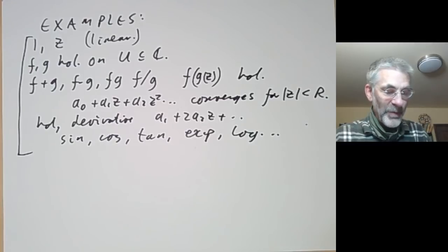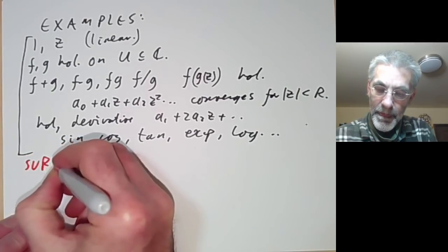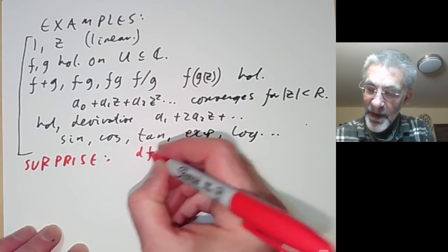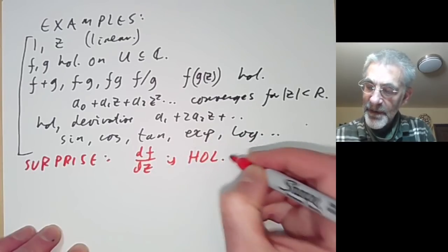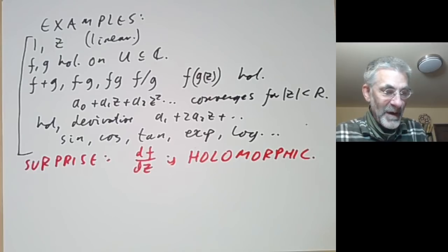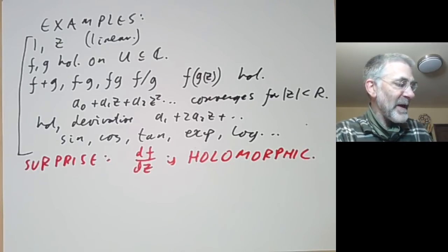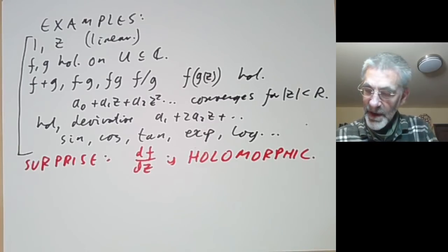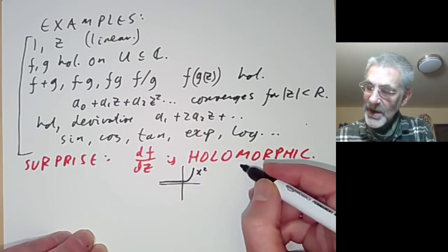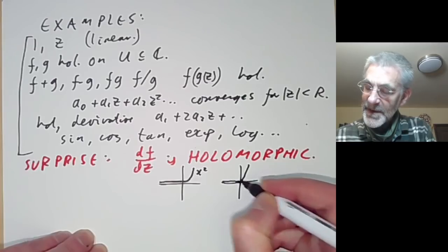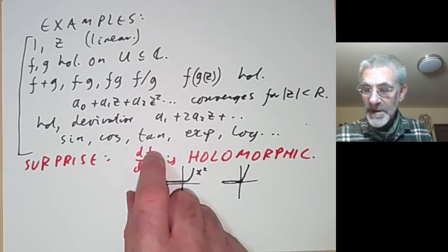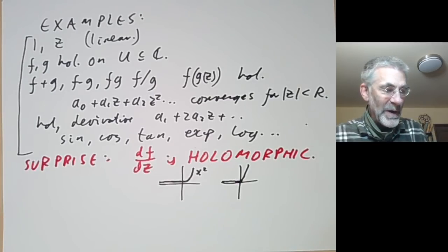There's a non-obvious example: df/dz is holomorphic if f is. The reason this is a surprise is it's totally false for real variables. You can have a function of a real variable that's differentiable everywhere — for example, zero for x less than zero and x squared for x greater than zero — and its derivative is certainly not differentiable at zero. We're not going to prove this yet because it requires some extra ideas we haven't yet covered.